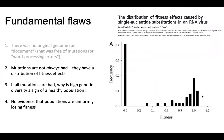Fundamental flaw number two: mutations are not always bad. They have a distribution of fitness effects — some are bad, some are neutral, and some are good. This has been shown experimentally. I'm going to show you two ways to evaluate the distribution of fitness effects. The first is mutation induction experiments, where you induce mutations directly onto the population so you don't have to wait for them to occur naturally and can directly measure their fitness impact.